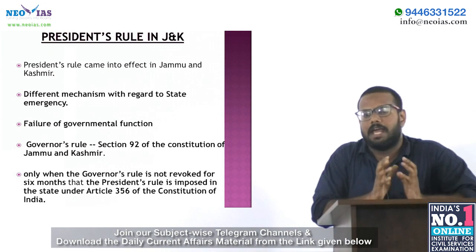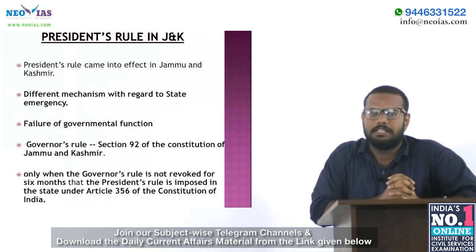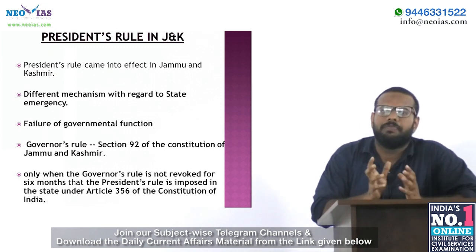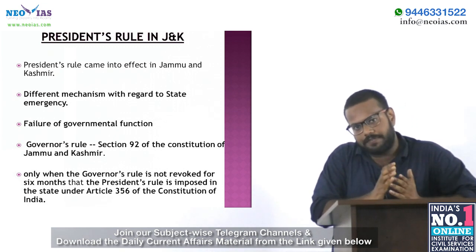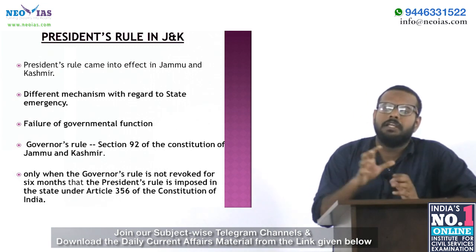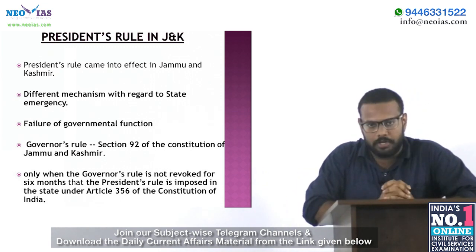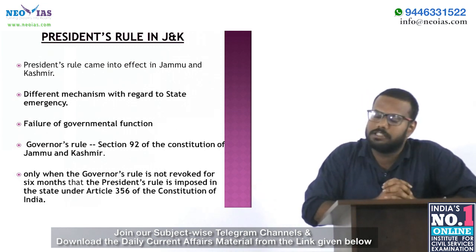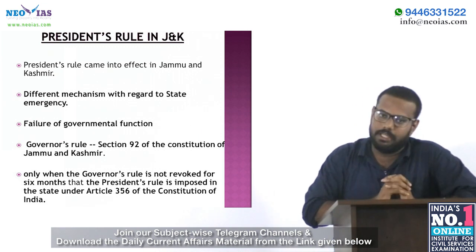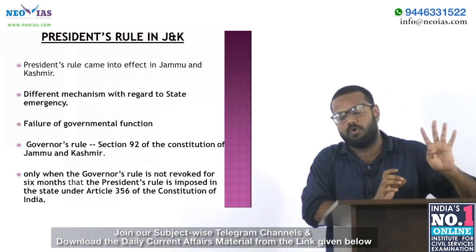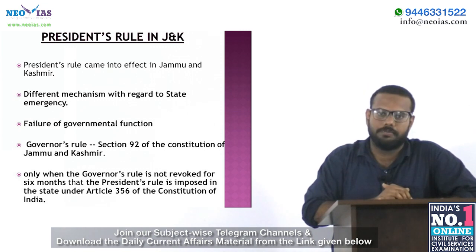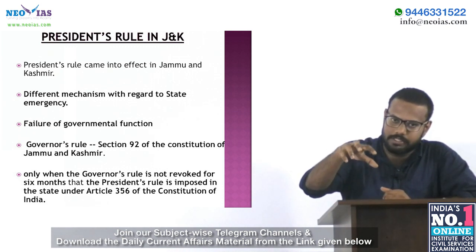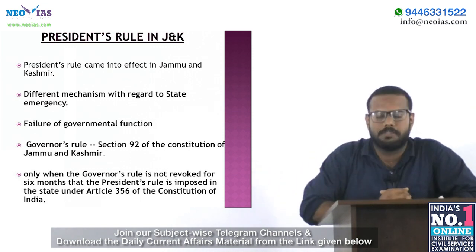BJP withdrew support in June, around June 20th, causing the failure of the administrative machinery. Immediately after, the Union government imposed Governor's Rule under Section 92 of the J&K Constitution. Now it is December 20th — exactly six months later. So after six months, President's Rule is now imposed. The condition is that the Governor's Rule for the state must last for six months without being revoked.